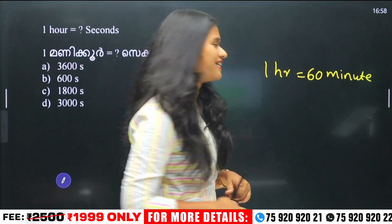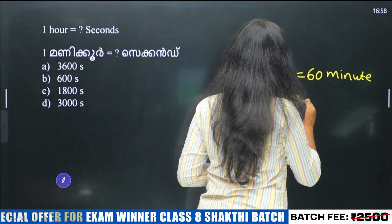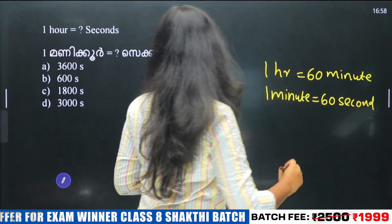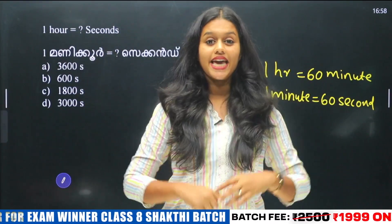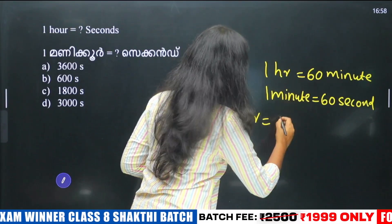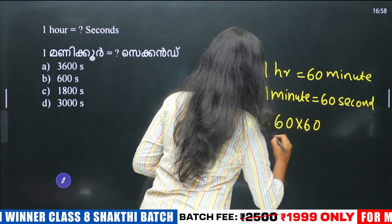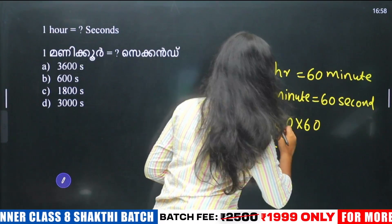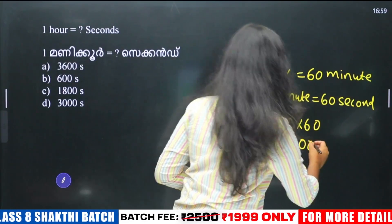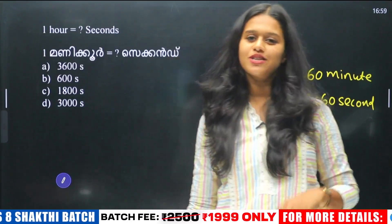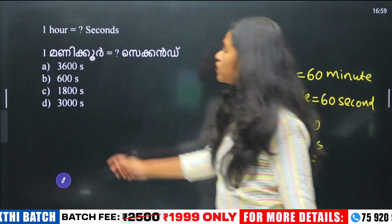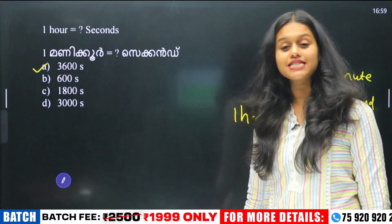1 minute is equal to 60 seconds. So, we are going to see how many seconds equal 1 hour. We think that 1 hour equals 60 minutes, and that equals how many seconds? 60 times 60 equals 3,600 seconds. So the correct answer is 3,600 seconds. Option A is 3,600 seconds — that is correct.